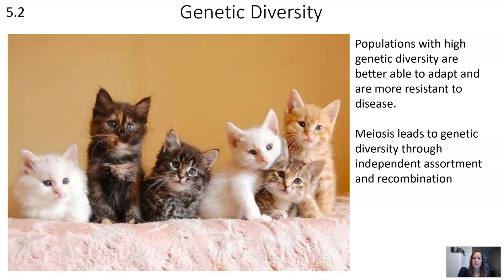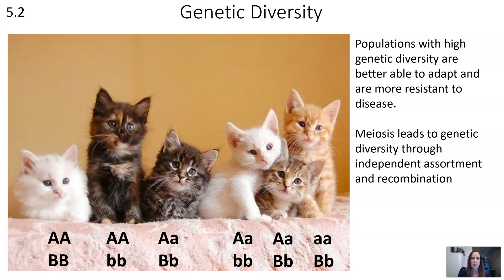To illustrate with an example, imagine we're paying attention to two Mendelian traits in kittens — say, volume of their meow and length of their claws, each coded for by a single gene. In a litter of kittens, you could end up with all of them having unique genotypes: loud meows with short claws, loud meows with long claws, and so on. Even a single parent cat can produce a wide variety of genotypes in offspring, meaning some may do better in a given environment than others.